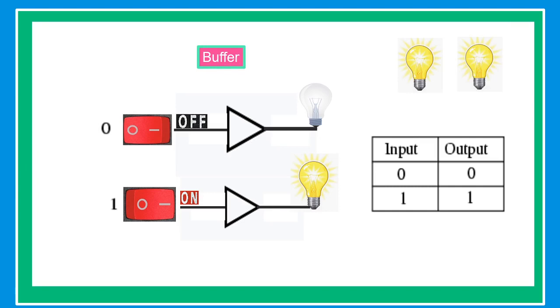A buffer gate has only a single input and a single output. If it receives 0 as an input, the output is also 0. Similarly, when it receives 1 as an input, the output is also 1.